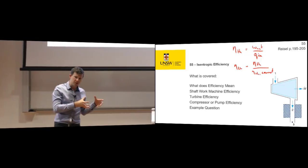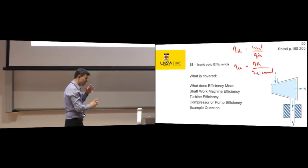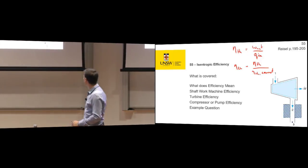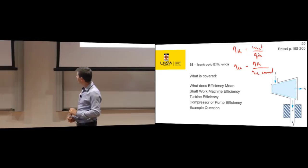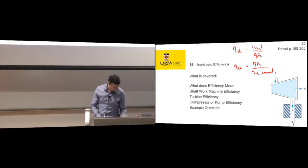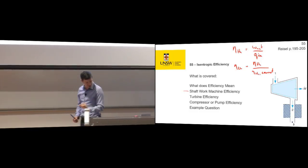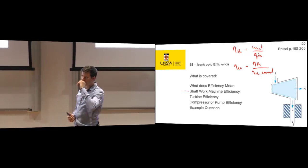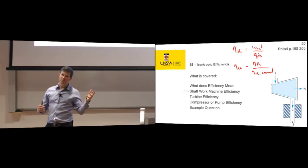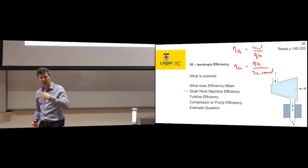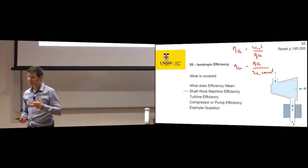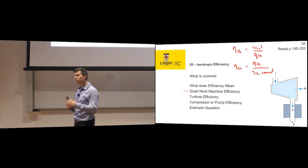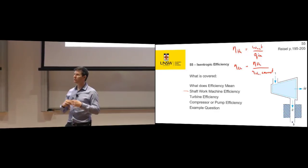Those are the two efficiencies covered so far. Now we're talking about a third: isentropic efficiency. The key point is that isentropic efficiency is the efficiency of a shaft work machine. We've been saying a turbine reduces the pressure of the fluid from 10 MPa to 100 kPa in an isentropic — that is, ideal, perfect — manner. What if it's not perfect, say 92% efficient?